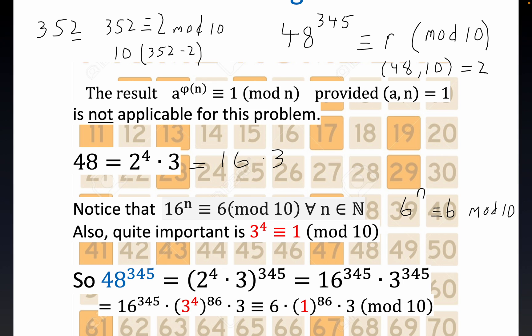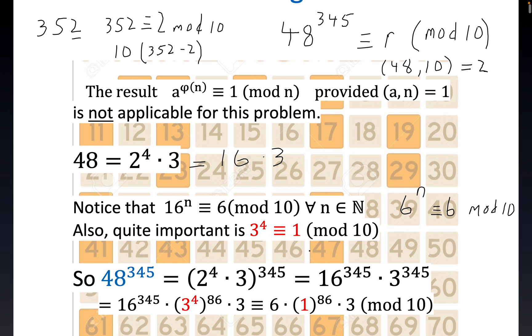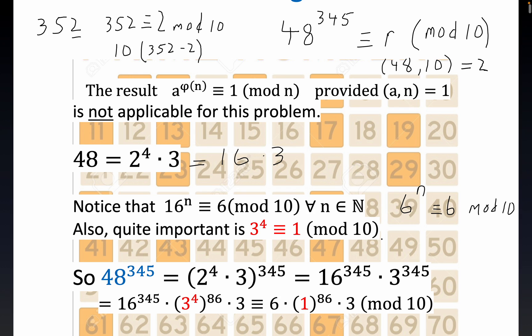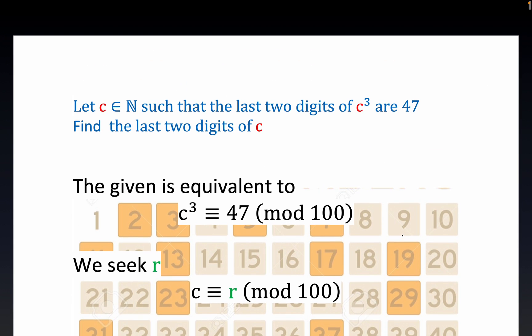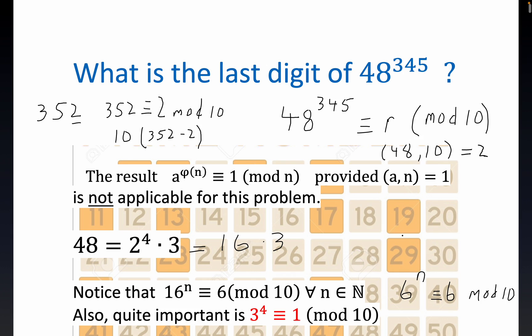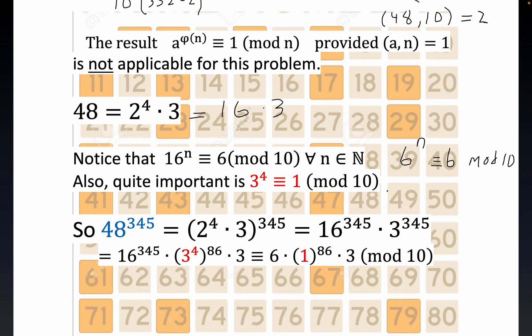The proof of that isn't very difficult. Also, another thing that's super useful here is 3^4 is congruent to 1 mod 10. Another way of saying that: 3 to the 4th is 81, so 10 definitely divides 81 minus 1.